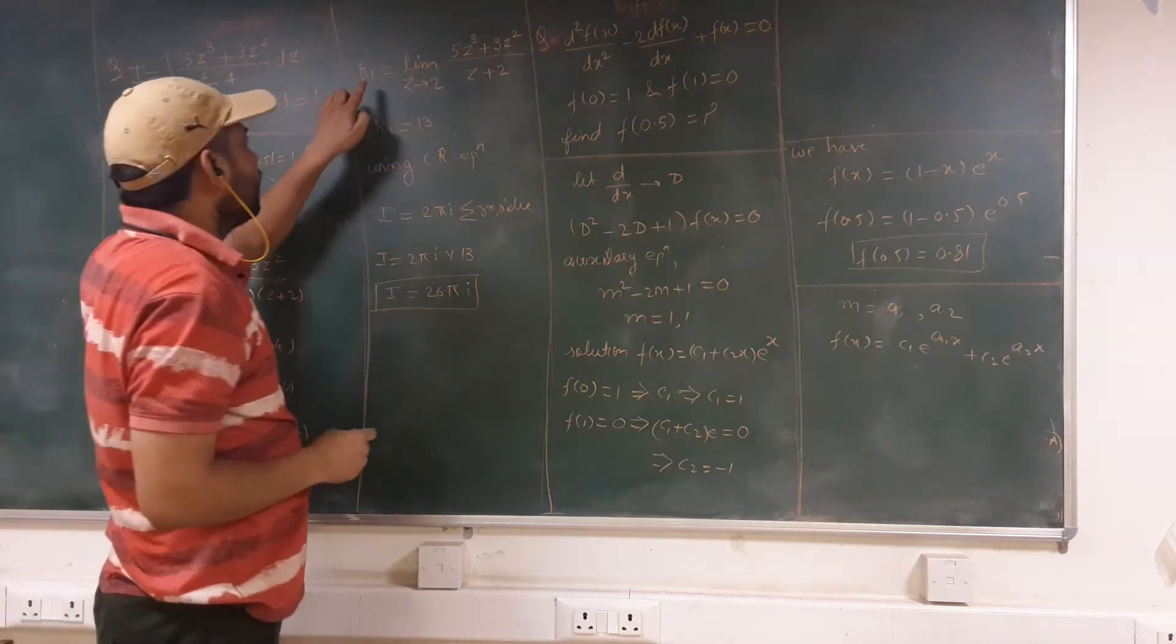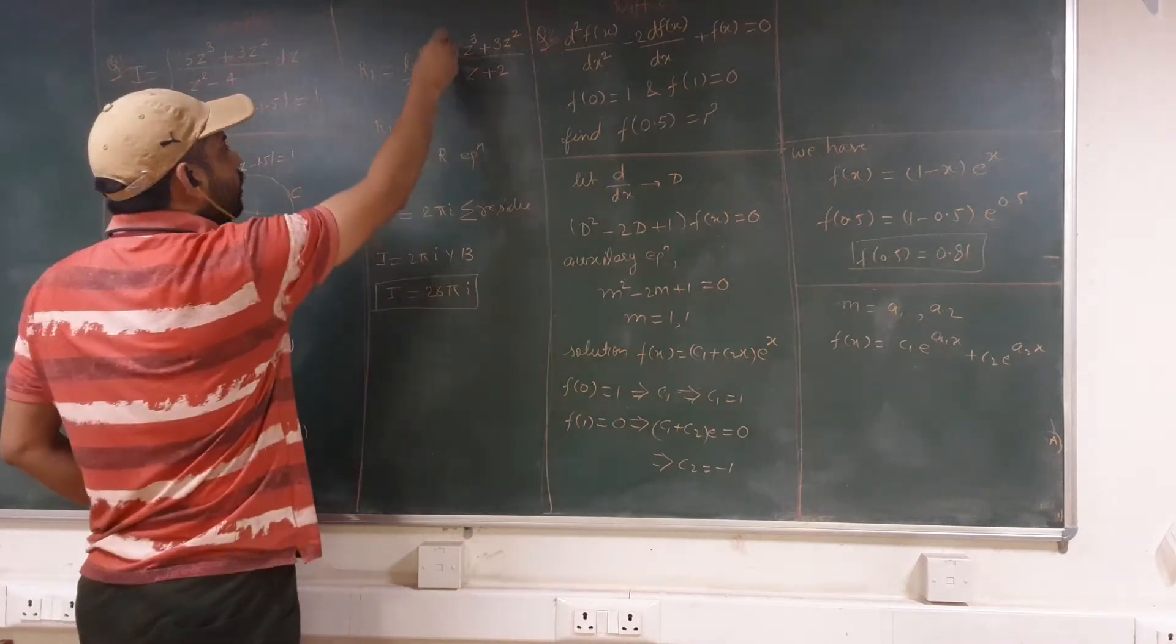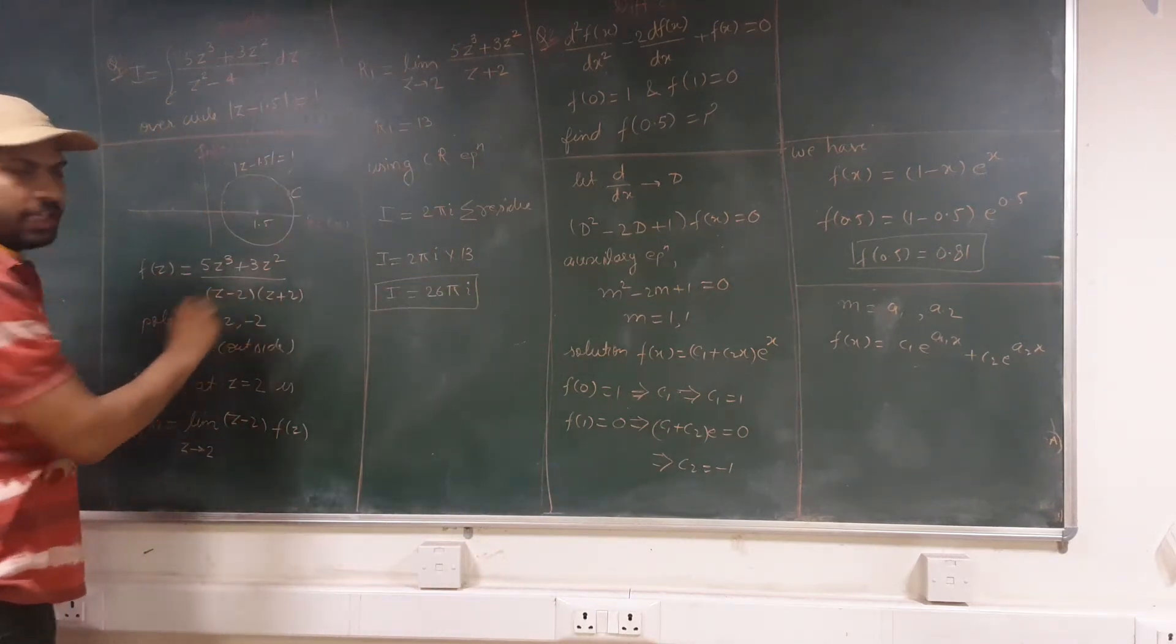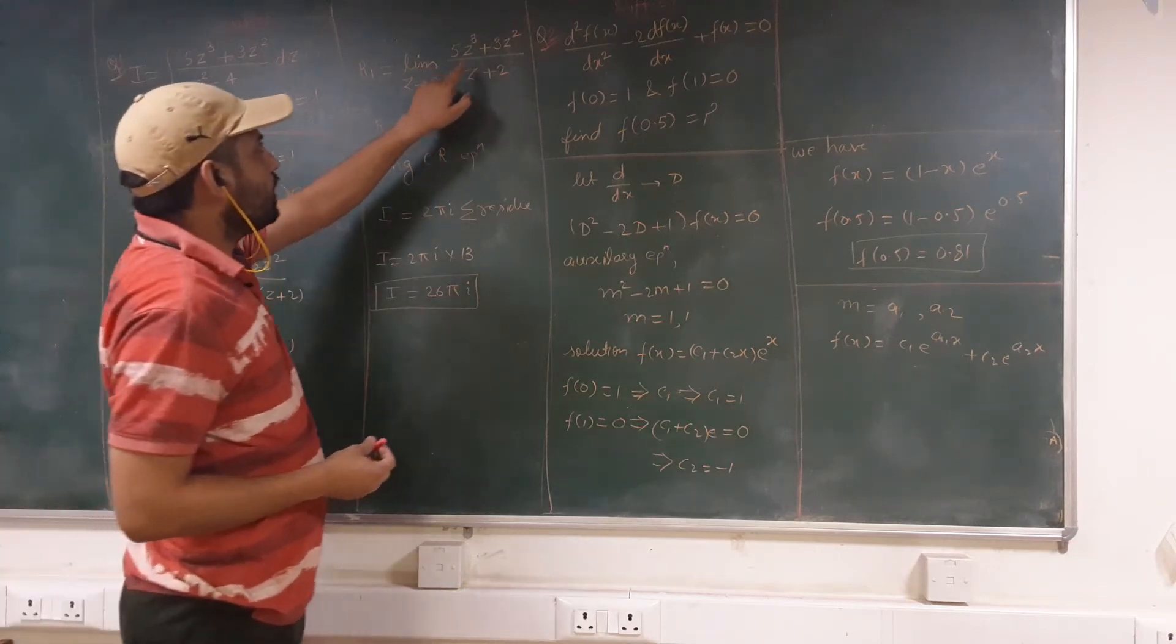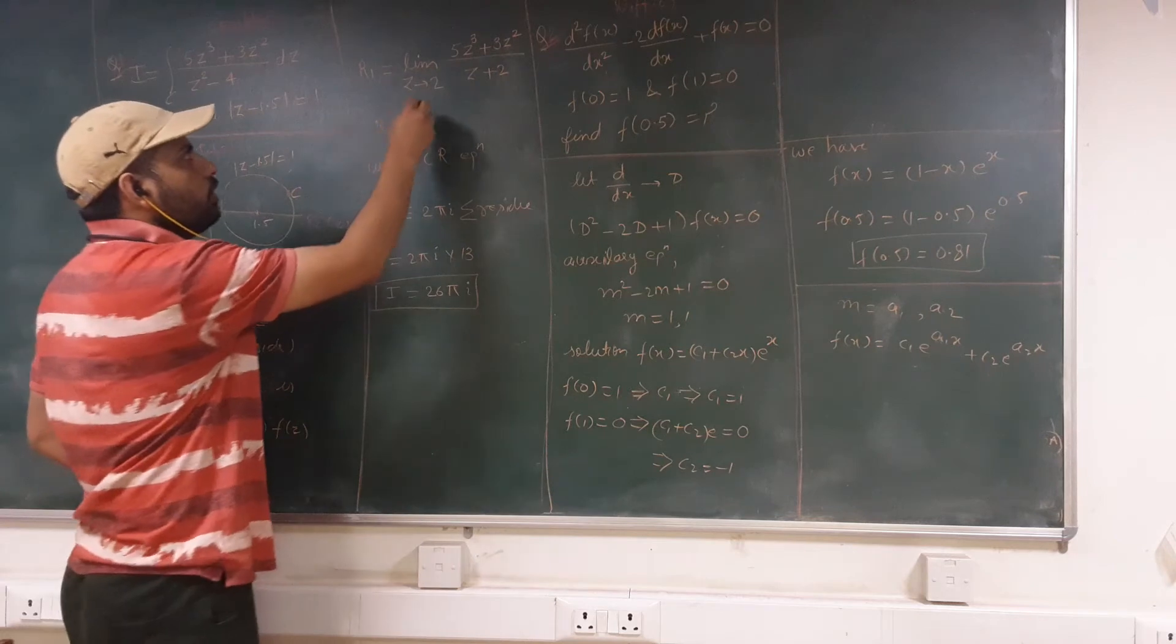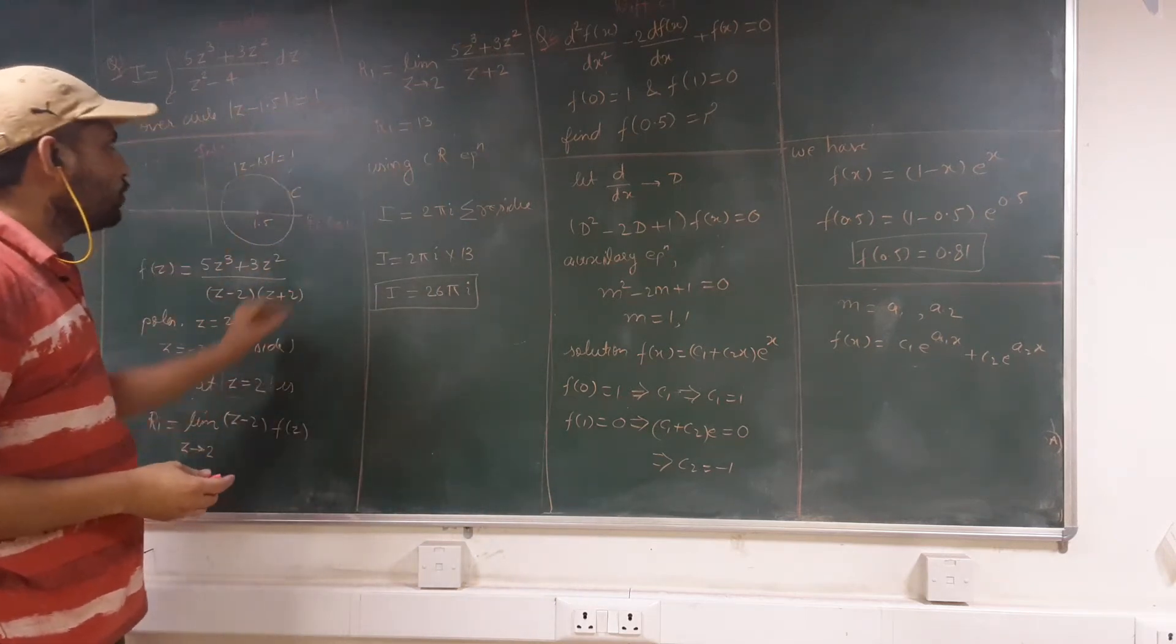So you can simply write the residue R₁ as limit z tending to 2. This (z - 2) factor will cancel with this denominator (z - 2) factor. So we will have limit as (5z³ + 3z²)/(z + 2). And if we put this limit in this function, we will have residue at z = 2 as 13.